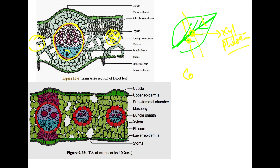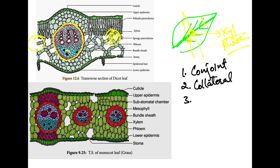These vascular bundles are: number one, they are conjoint; number two, they are collateral; and number three, they are closed. Conjoint means xylem and phloem are present together in one bundle. Collateral means they are placed side by side — xylem and phloem arranged sideways. Closed means the cambium is absent between xylem and phloem.